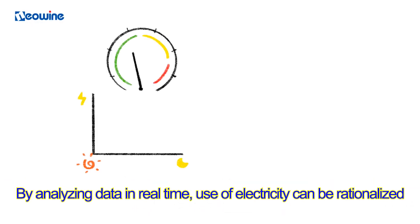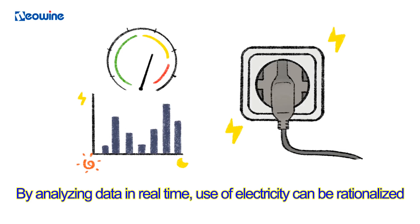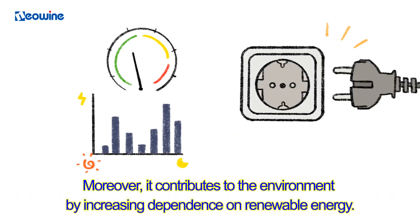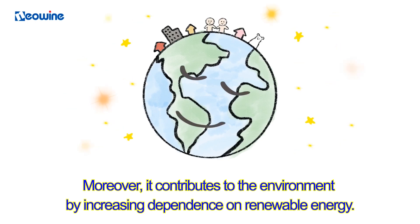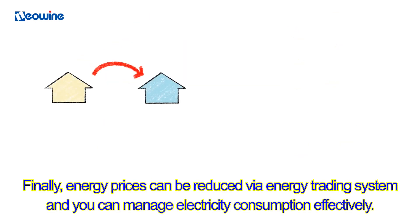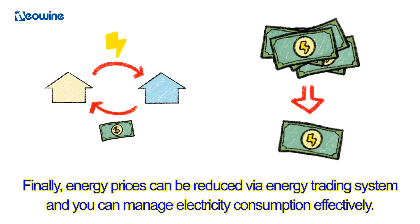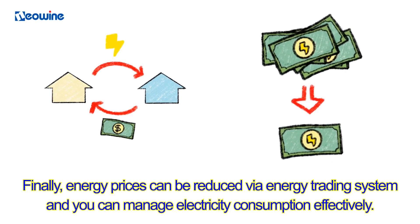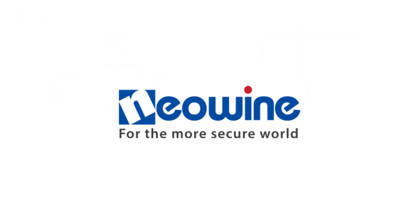By analyzing data in real time, use of electricity can be rationalized. Moreover, it contributes to the environment by increasing dependence on renewable energy. Finally, energy prices can be reduced via the energy trading system, and you can manage electricity consumption effectively.